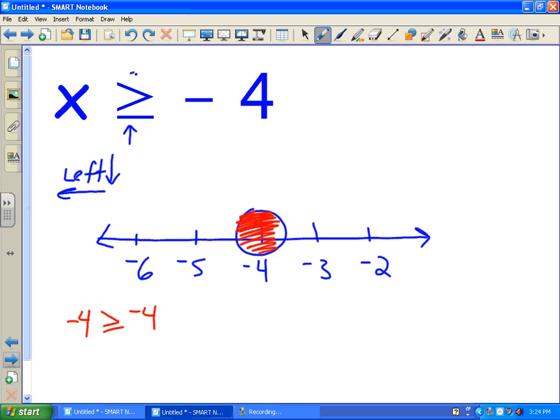So then I think about, let's pick a couple test points. So I'll pick negative 3. Is negative 3 greater than or equal to negative 4? Well, yes it is. So then I can shade to the right. Or if I looked at my sign, it's pointing that way. The variable comes first, it's pointing that way. So then I can shade this way. So that's what my graph looks like.